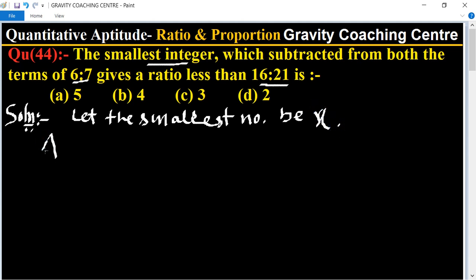And according to question, x is subtracted in both the terms, so (6-x) upon (7-x) which is less than 16 upon 21.